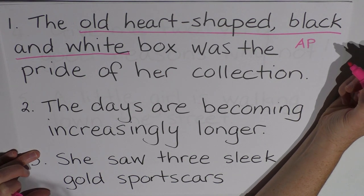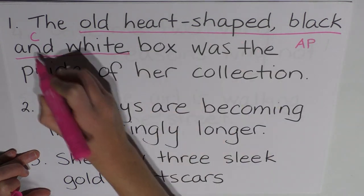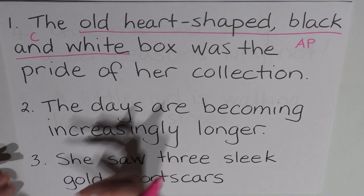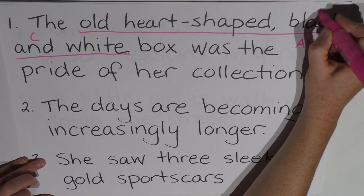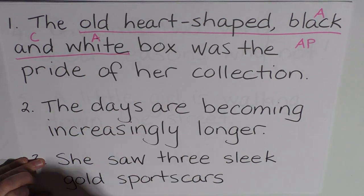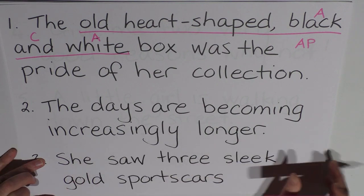Now, and in here is a conjunction, but it's joining together black and white. So it's still part of the adjective phrase. It's pulling together those two adjectives, black and white. So this is an adjective, this is an adjective, and the conjunction is pulling them together. Okay, let's have a look at the next sentence.